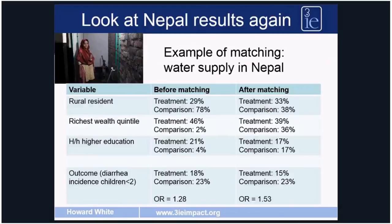Now we understand why the after-matching balance is so much better than before matching, where there actually wasn't any balance. That balancing has occurred because we established a region of common support — throwing away data on households that were very dissimilar — and restricted our data to those with an overlapping propensity score, making similar characteristics more likely and achieving the balance we see.